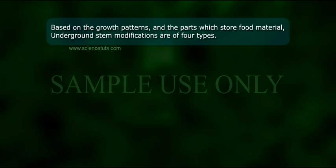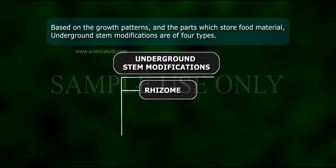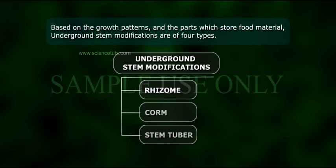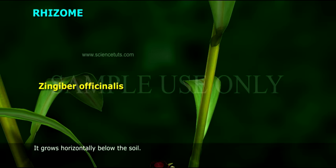Based on the growth patterns and the parts which store food material, Underground Stem Modifications are of four types: Rhizome, Corm, Stem Tuber, and Bulb.